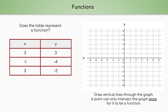Next, does this table represent a function? For it to be a function, every X must be matched with exactly one Y. Three is matched with three, negative one is matched with negative four, and positive three is matched with negative two. But positive three was already matched with positive three, so positive three is paired with more than one Y value — thus this is not a function.